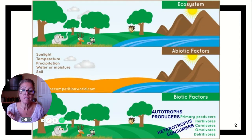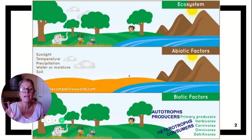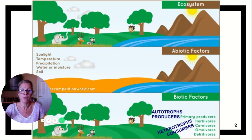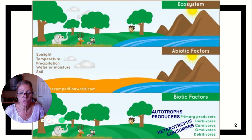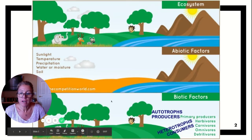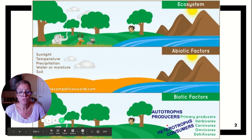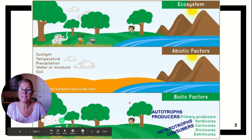Abiotic factors — you can see sunlight, temperature, precipitation — these are non-living things, and they're going to have an impact on who can live what and where. Like you're not going to have a tropical plant in the desert. And then biotic factors: if you look at the bottom, you've got autotrophs, producers, and you've got heterotrophs, consumers. What they're not showing you here is decomposers. So those are biotic factors in a community.